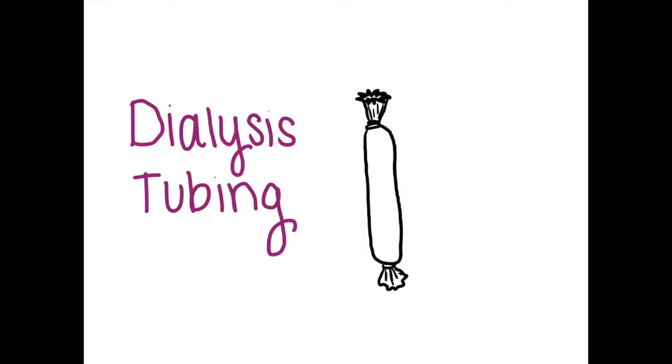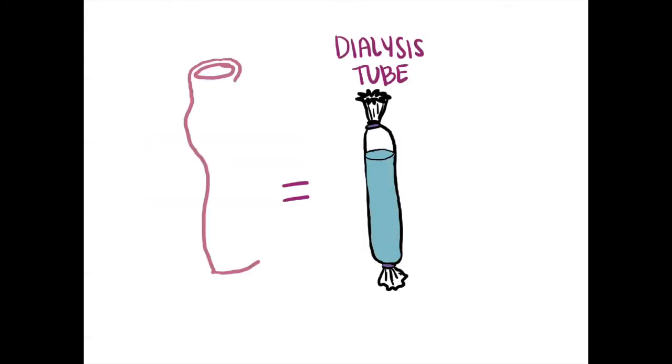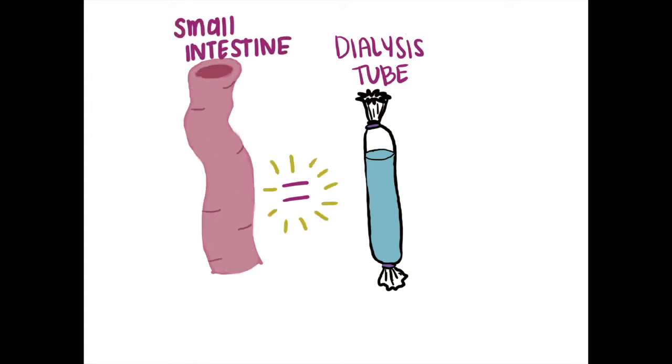An easy way to see how the small intestine functions is to use dialysis tubing. In the dialysis tubing experiment, the dialysis tube represents the small intestine. The tubing has a semi-permeable membrane, just like our small intestine does.